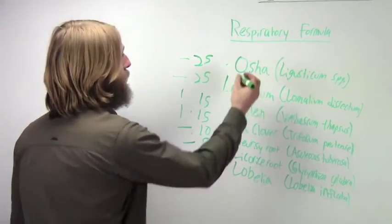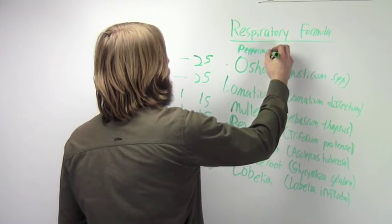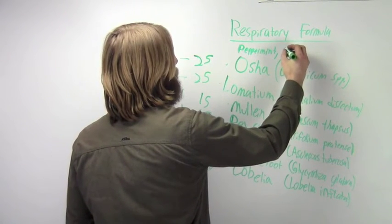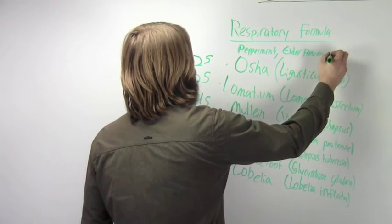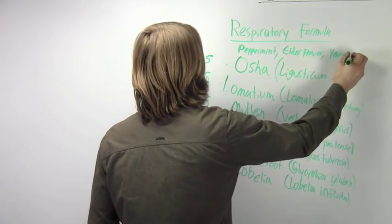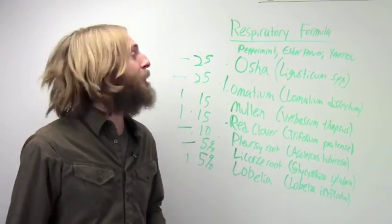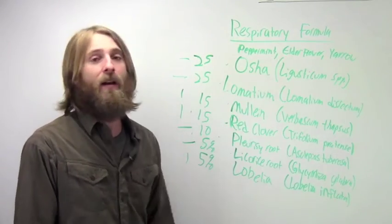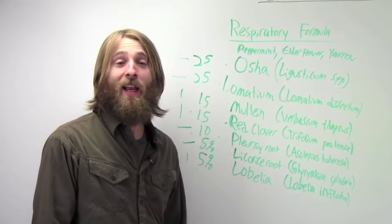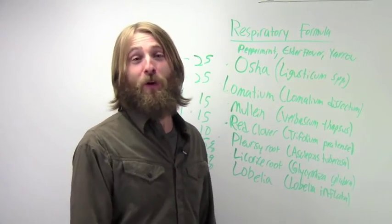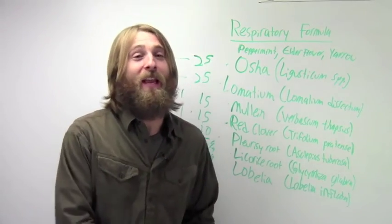One thing I would say about this formula, the Pleurisy and Lobelia are pretty low so if the person really had a fever going I would probably want to give them our classic three-part fever formula used in Western herbalism which is Peppermint, Elderflower, not elderberry but the flowers, and Yarrow flowers. That is our classic three-part fever diaphoretic formula there. So I'd probably give some of that diaphoretic tea, a respiratory formula like that, and then tell them to sleep for three or four days straight not getting out of bed, drinking lots of water, drinking broth. That is a ticket there to getting better.